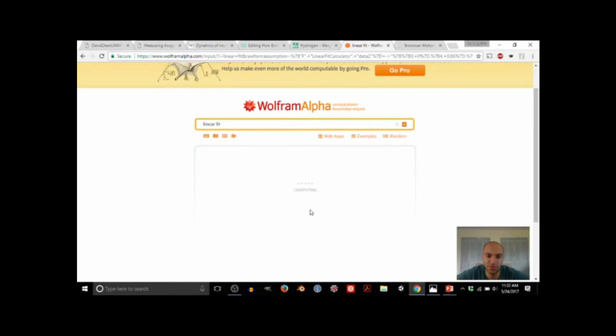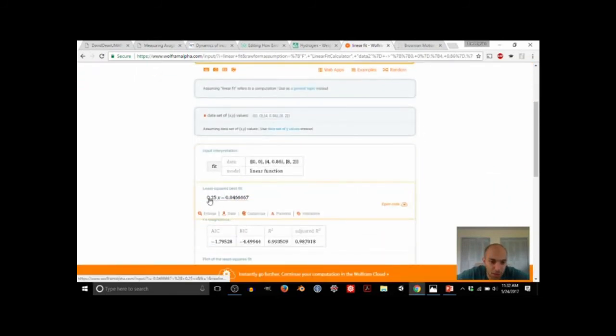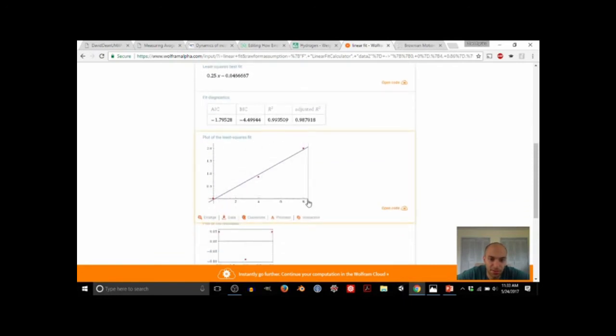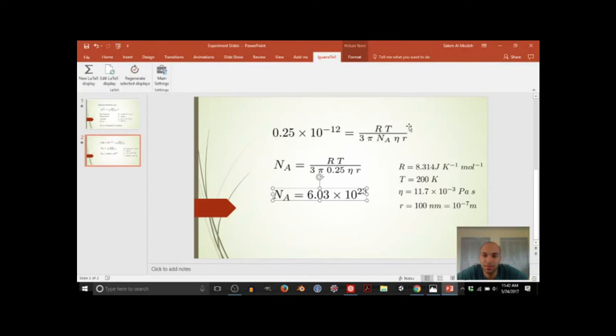And then hit enter, and it just gives you an estimate of the relationship. It gives you the slope of the graph. So this is the graph that we did—this would be time and this would be x squared—and the slope of it is 0.25. From that slope we get this relationship. This minus 12 here is just because we have a micrometer instead of meter, so if you convert micrometer squared to meter squared, you get 10 to the minus 12.